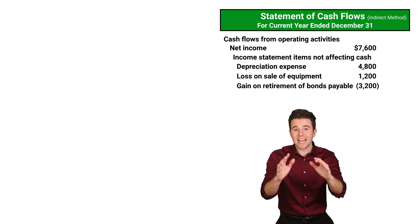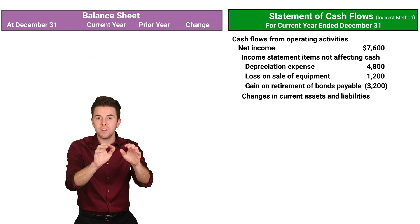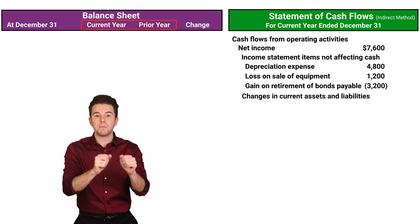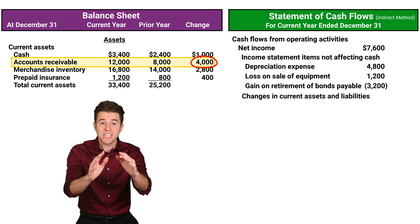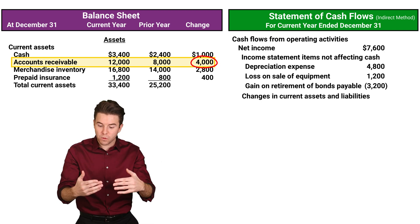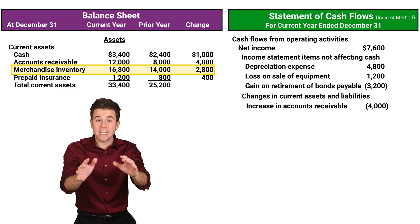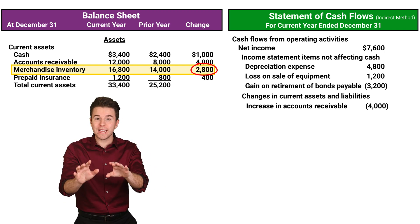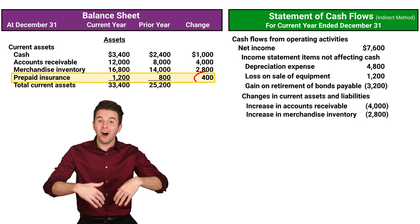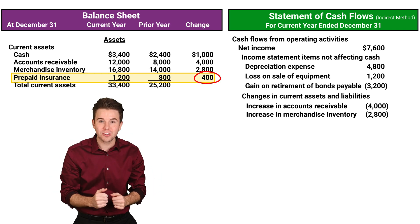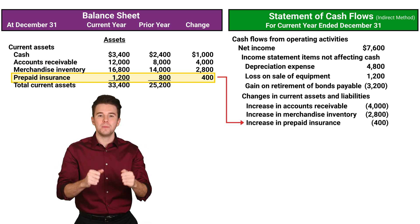Now, the second set of adjustments are for changes in current assets and current liabilities. To do this, we look at comparative balance sheets showing the current and prior year. Looking at our current assets, not including cash, we see that accounts receivable increased, meaning that we collected less cash than what was reported in sales. Therefore, we subtract this increase in receivables from net income. Merchandise inventory also increased, meaning that more cash is tied up in inventory at year-end, so we subtract the increase from net income. Prepaid insurance also increased, meaning cash paid for insurance is more than what we recorded in operating expenses, so we subtract the increase from net income.